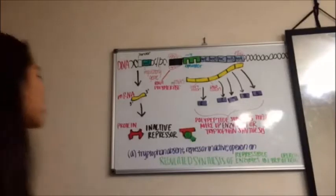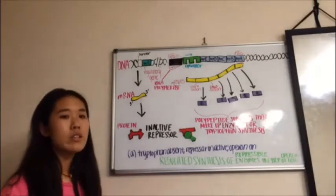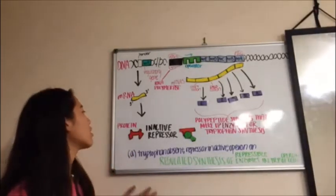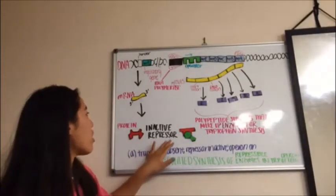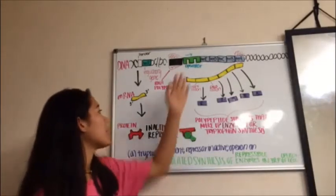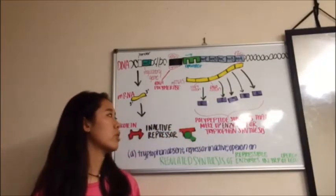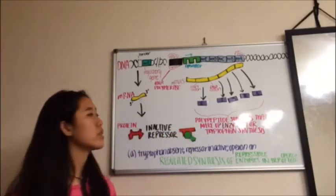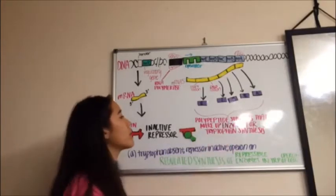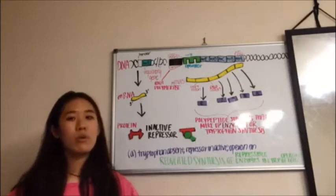So in this diagram, it details the regulated synthesis of repressible enzymes in the TRP operon of E. coli. Usually the TRP operon is on, which means that the repressor is off, it's inactive. It cannot be bound to the operator, so it does allow RNA polymerase to function, allowing RNA transcription to occur. When that occurs, the polypeptide subunits are created and code for enzymes for tryptophan synthesis.